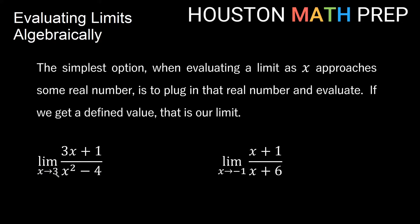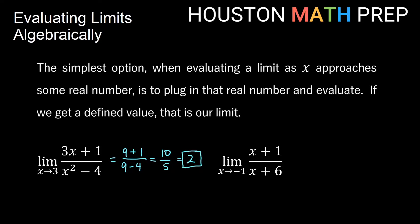Looking at our first example: the limit as x approaches 3 of (3x + 1) / (x² - 4). The concern with a fraction is dividing by 0, which would happen at x = 2 or x = -2. Since we're approaching x = 3, the graph is well-behaved there. So we plug in 3: the top gives 3×3 + 1 = 10, the bottom gives 3² - 4 = 5, and 10/5 gives us a limit of 2.